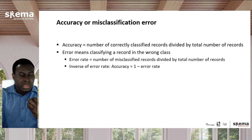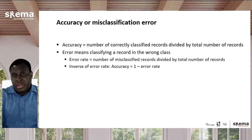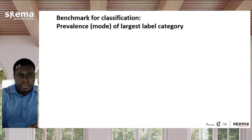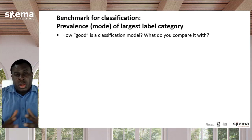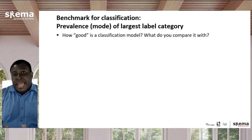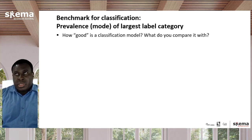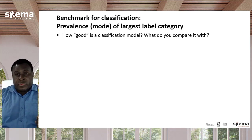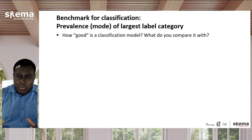What is also very important is how to determine if an accuracy value you get is actually a good one. So now we're going to talk about the benchmark for classification — against what are you comparing the results of a classification to see how good it actually is. Intuitively, especially if you have two classes and the computer is guessing true or false, you might say 50/50 — if it does better than 50% accuracy you think it's a good model. Well, not so fast.